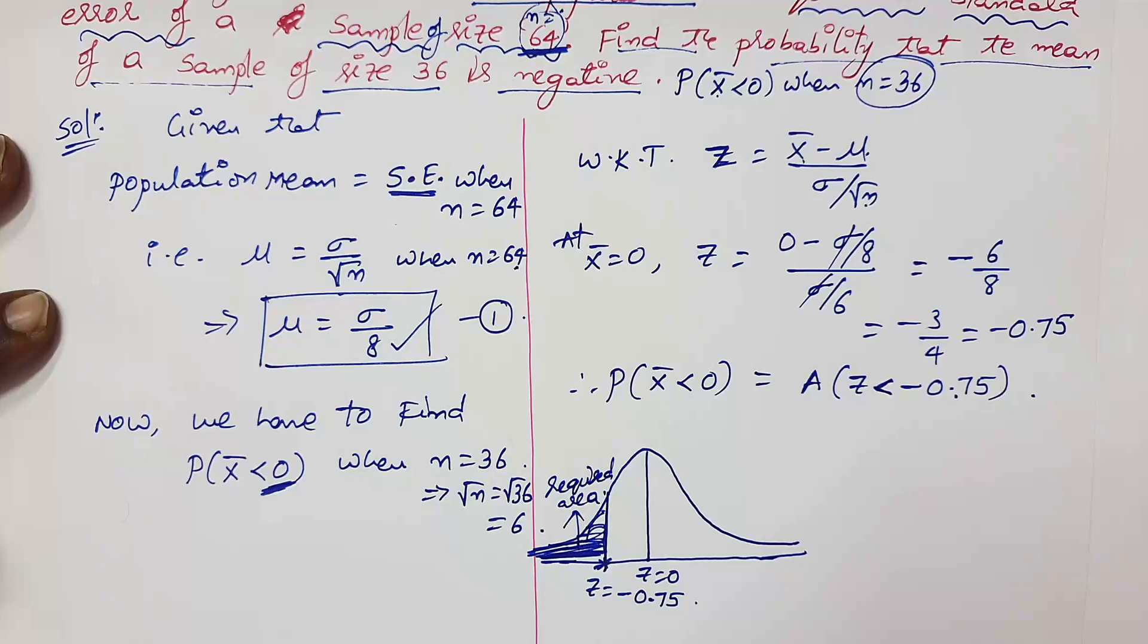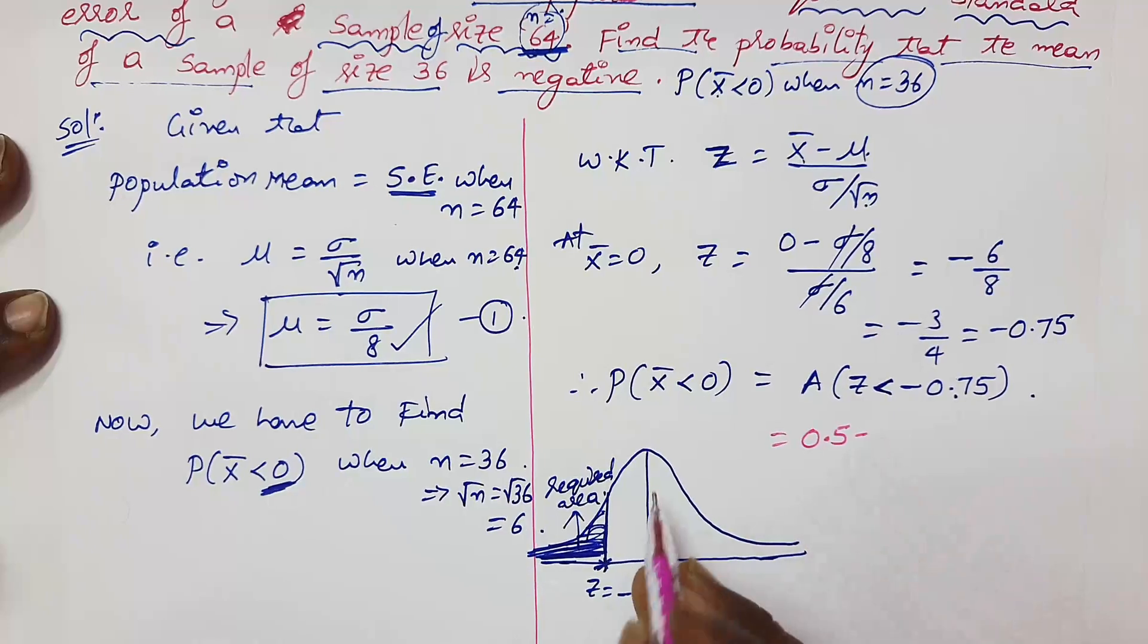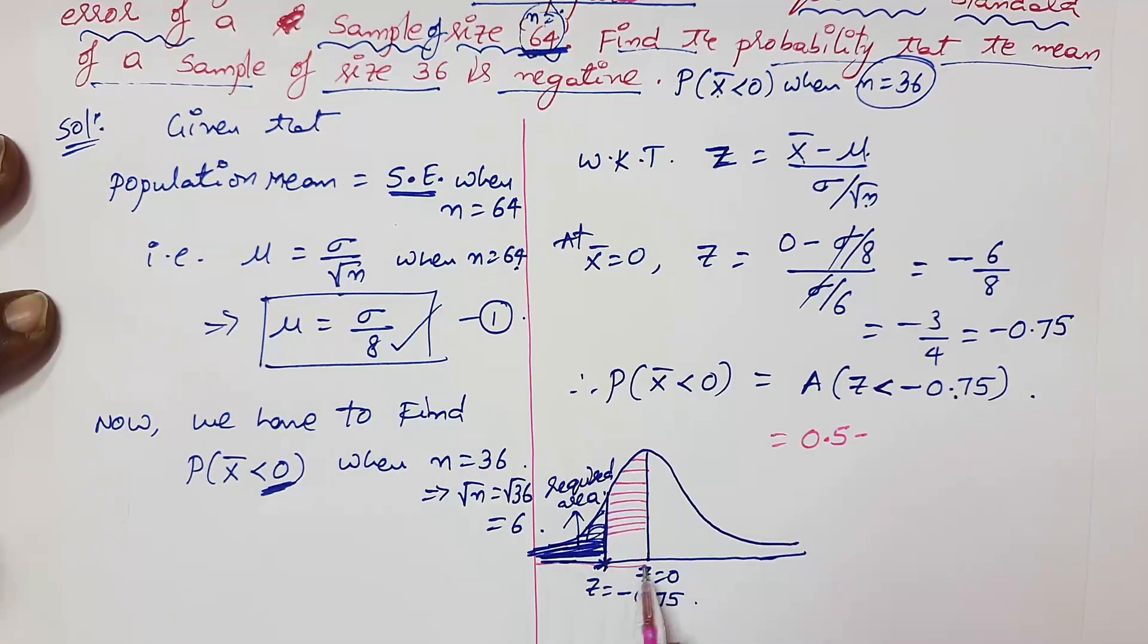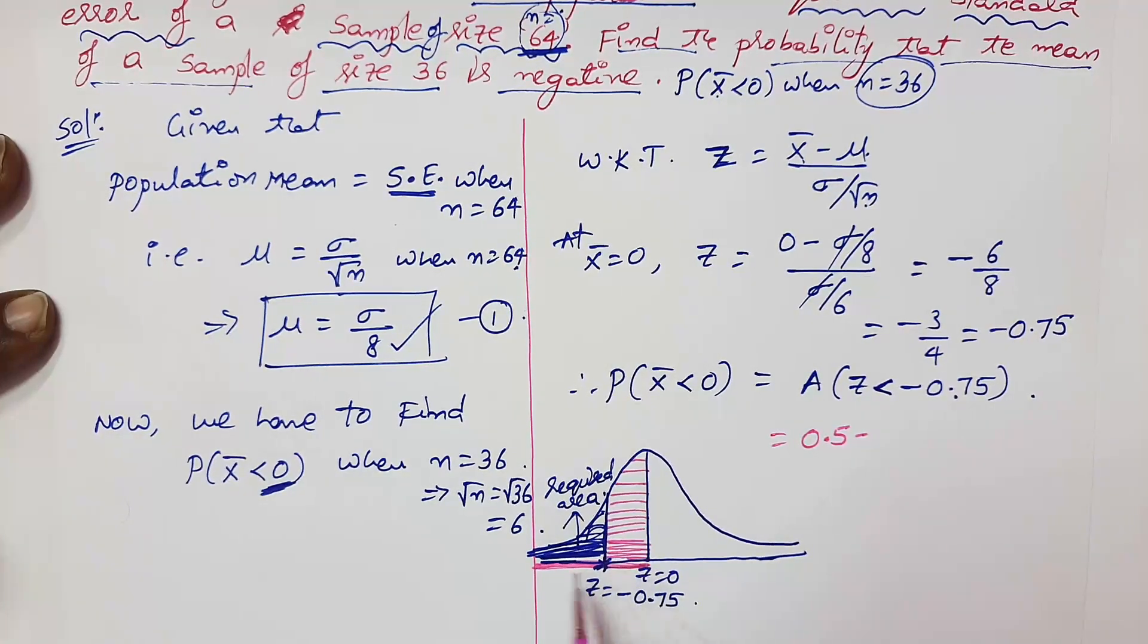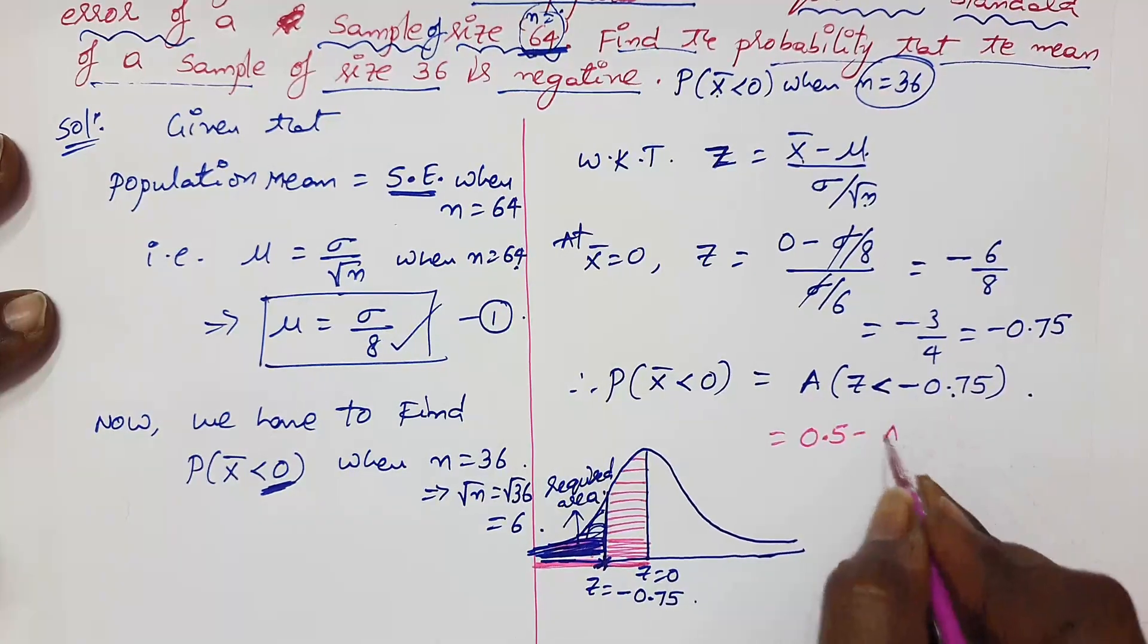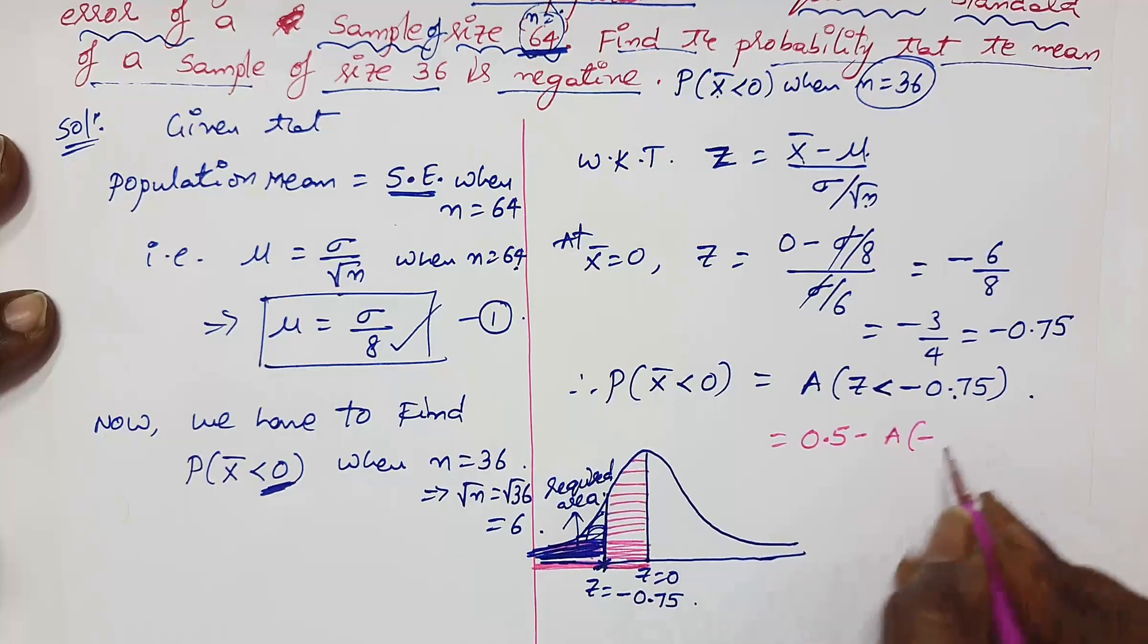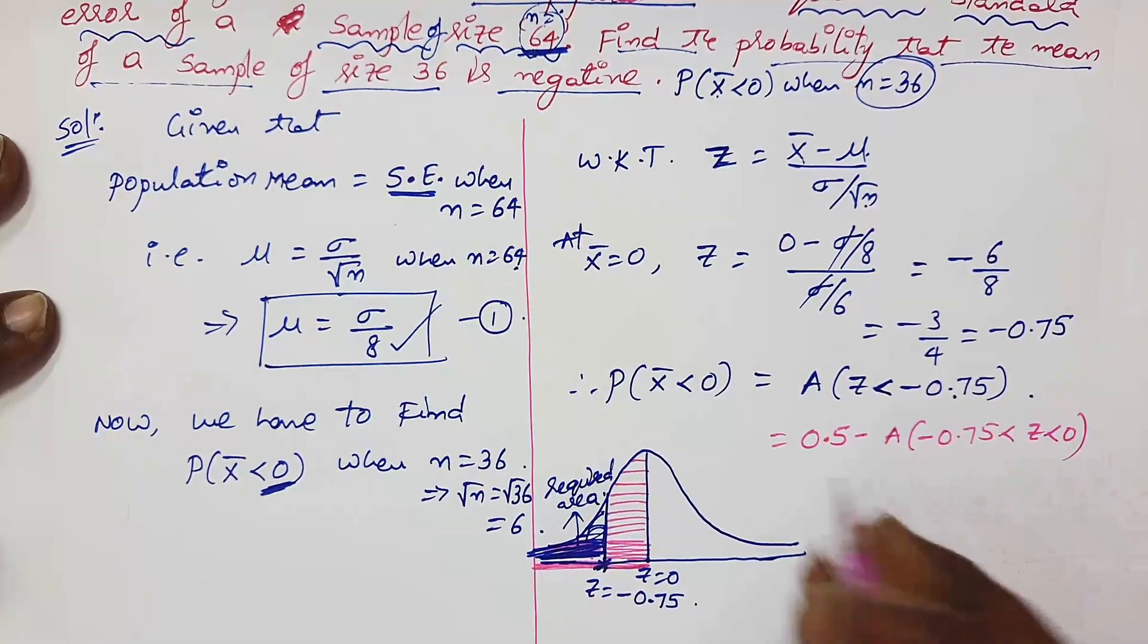How can we find out this required area? From the entire left side area, we can subtract this pink shaded area. From entire area, if you subtract this small area, you will get this one. So area from minus 0.75 to 0, it can be expressed in this way.